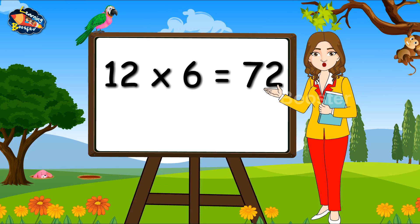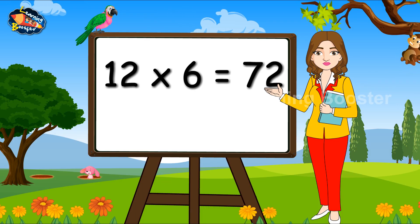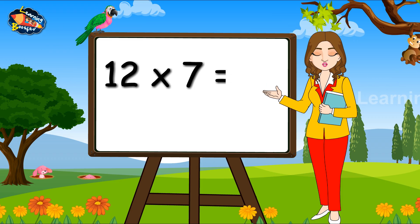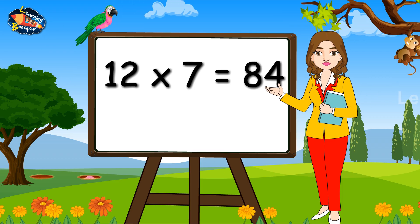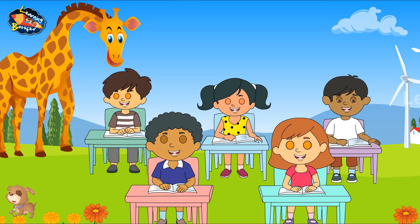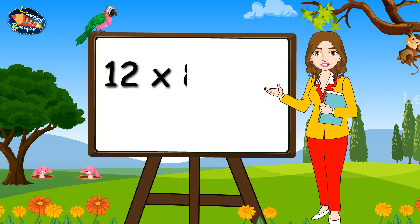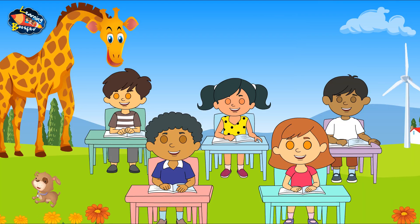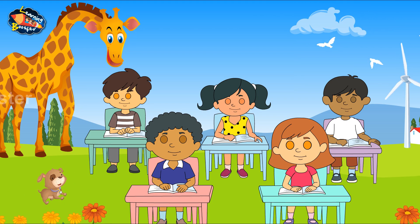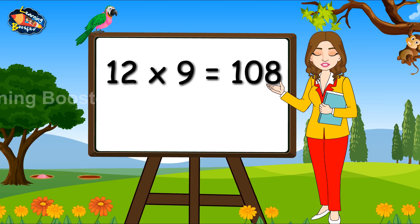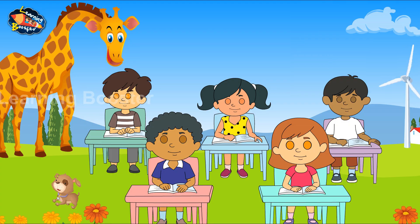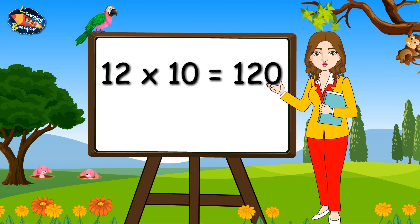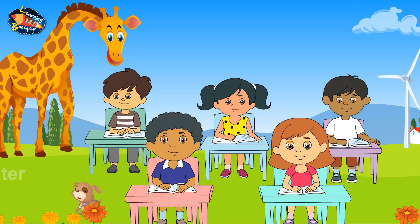Twelve fives are sixty. Twelve sixes are seventy-two. Twelve sevens are eighty-four. Twelve eights are ninety-six. Twelve nines are one hundred and eight. Twelve tens are one hundred and twenty.